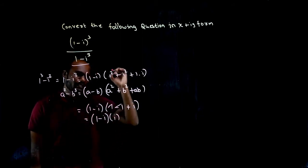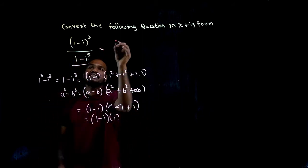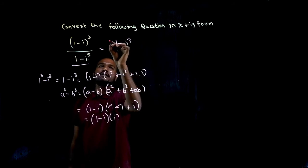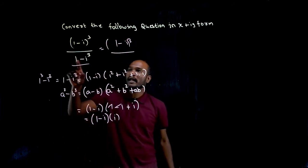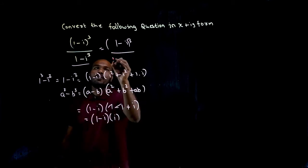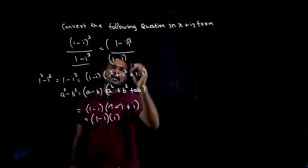I'll be left with i. So (1-i)³ can be written as (1-i) times i. The expression becomes (1-i) times i.